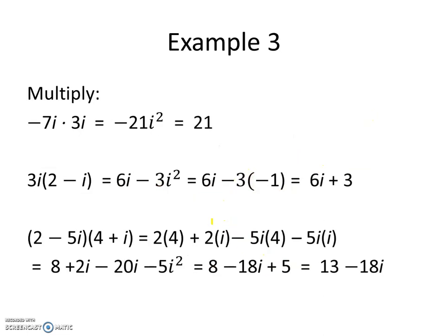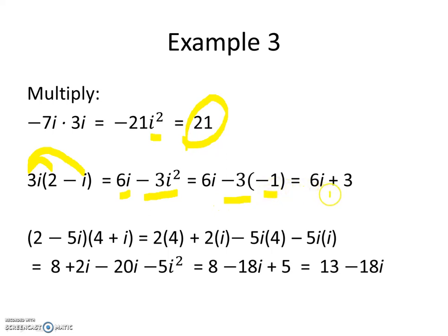On example 3, it says to multiply. We have negative 7i times 3i, so we get negative 21i squared. Since i squared is negative 1, negative 1 times negative 21 becomes positive 21. The next one is 3i times the quantity 2 minus i. We distribute that 3i to each piece: 3i times 2 gives 6i, and 3i times i is negative 3i squared. Since i squared is negative 1, negative 3 times negative 1 gives positive 3. So the answer is 3 plus 6i.